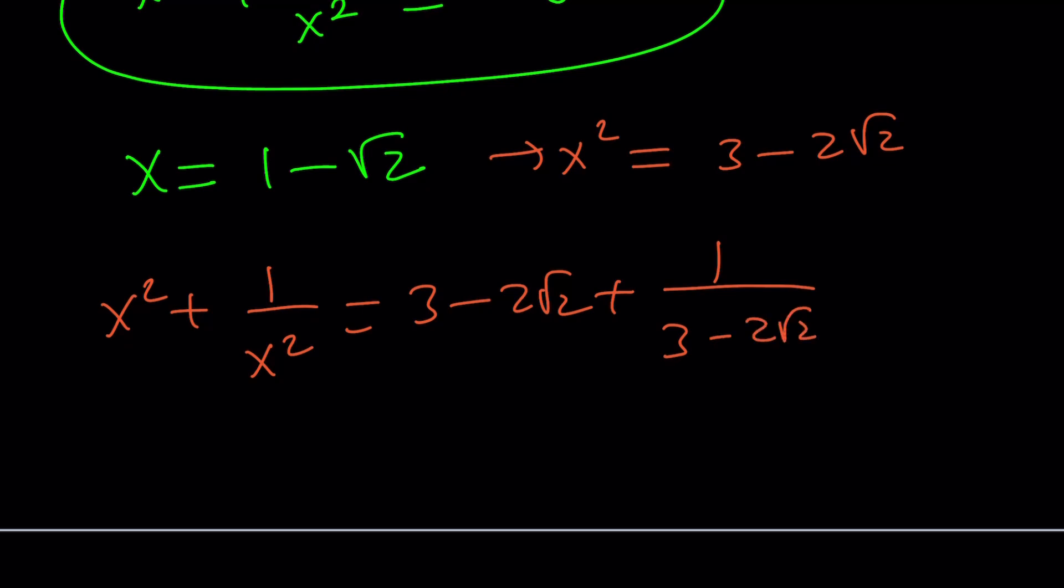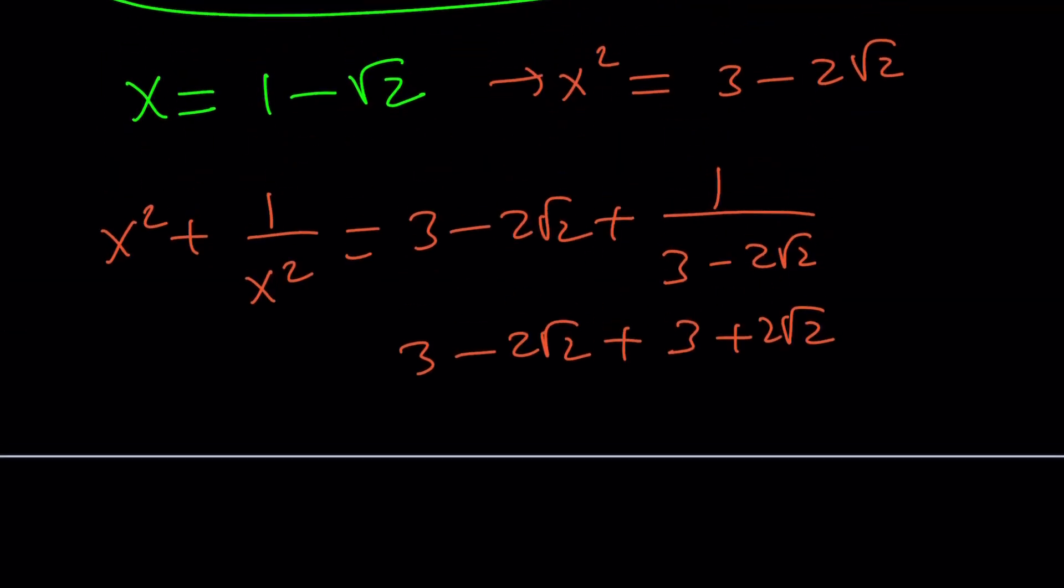And again, this is going to be the same, and the other one is just going to be the conjugate. The conjugate and the reciprocal are the same because its norm is 1. 9 minus 8 is 1. That's why.